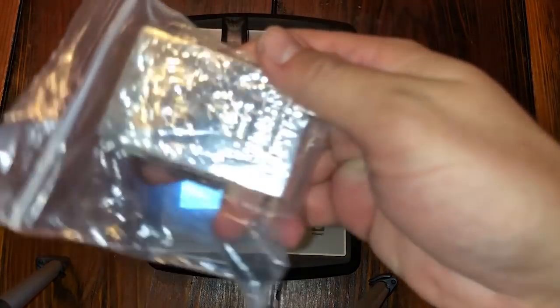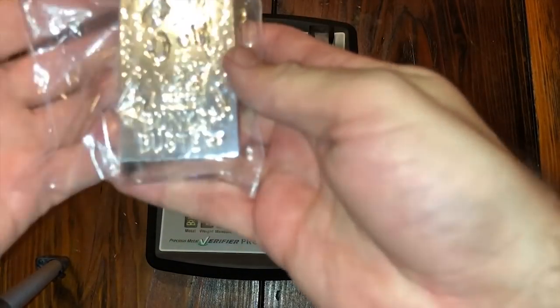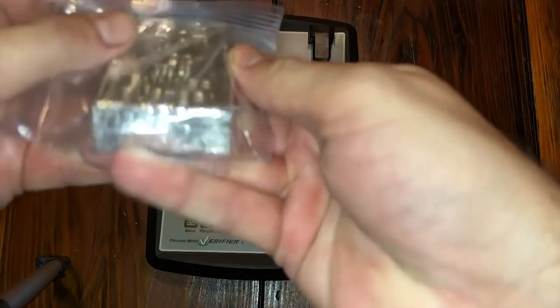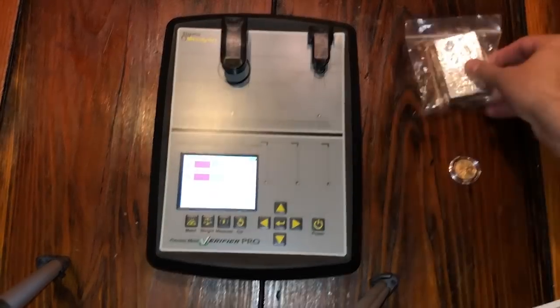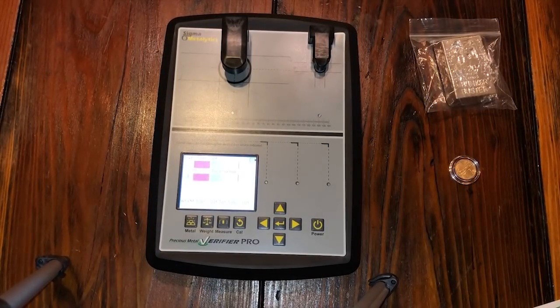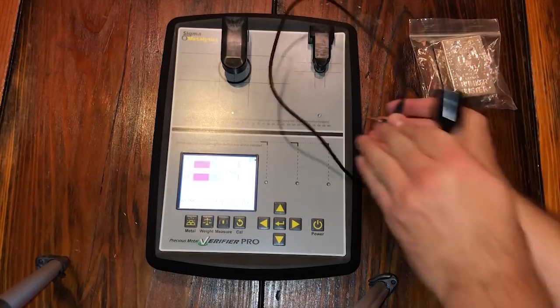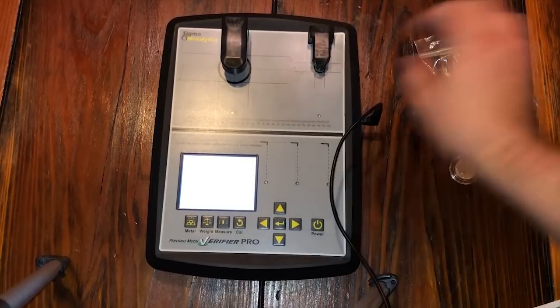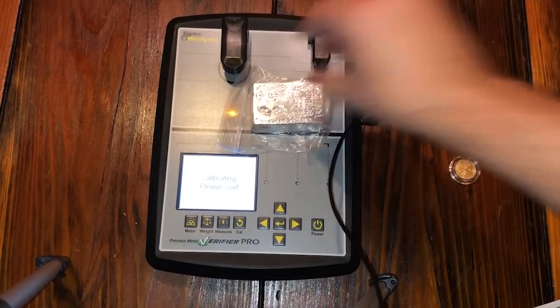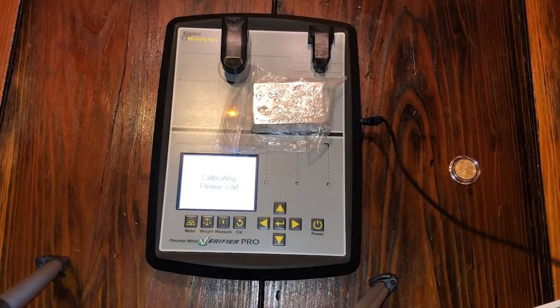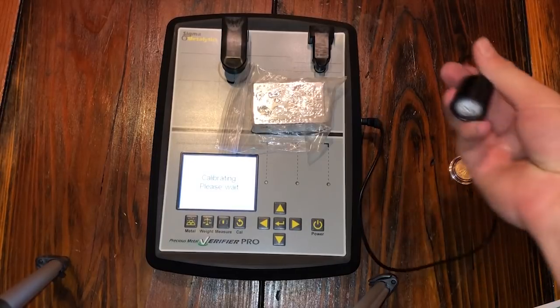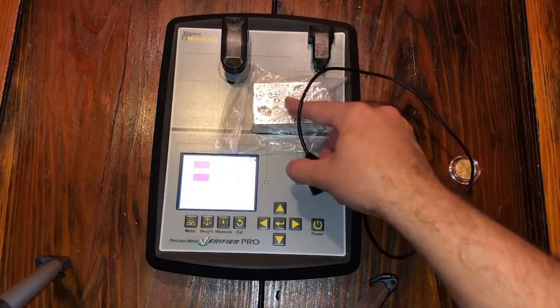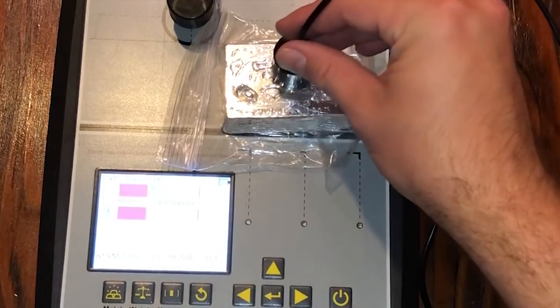Now what happens when you get a bar that doesn't fit like this awesome Hi-Ho Silver bunker buster - look at this baby. They've got something here called the refiner's wand. You plug it in the side here. You have to calibrate it each time you plug in a wand, it's not a big deal. And again you can check through the plastic.